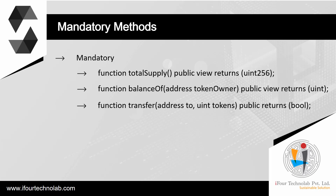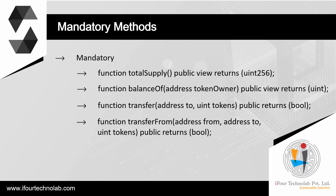The function `transfer(address to, uint tokens) public returns (bool)` is required. ERC20 tokens can be transferred directly from their owner's account to any other account with a public transfer function. The transfer function requires that the sender has enough tokens to fulfill the transfer; it will not do a partial transfer. Successful transfers must log the appropriate Transfer event, and the transfer must return a bool value. Note that the ERC20 standard is silent on whether the transfer should revert when msg.sender doesn't have sufficient tokens or simply return false; it must do one of the two.